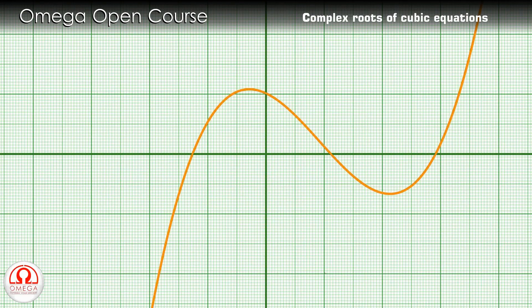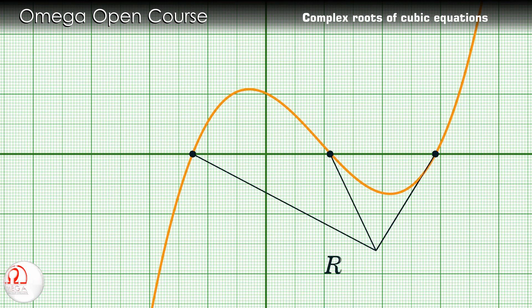If the graph of the cubic expression with real coefficients intersects the x-axis at three points, all three of its roots are real and the roots are the values of x where the curve intersects the x-axis.